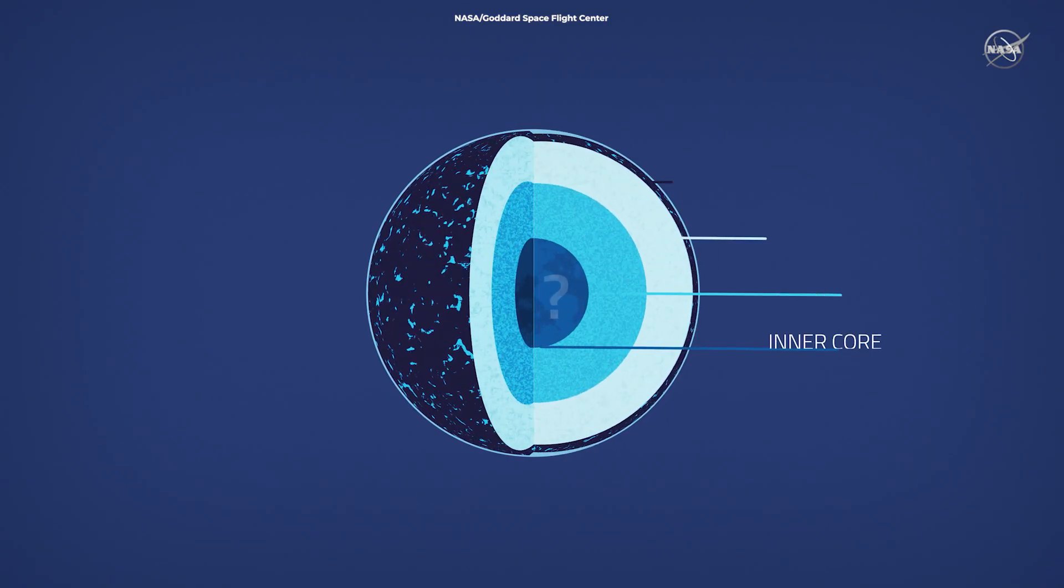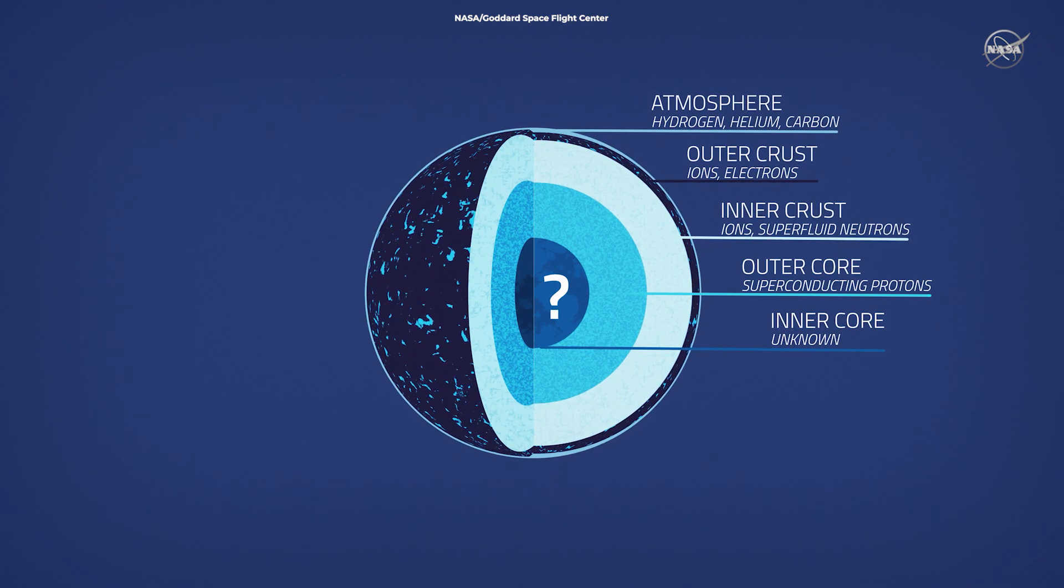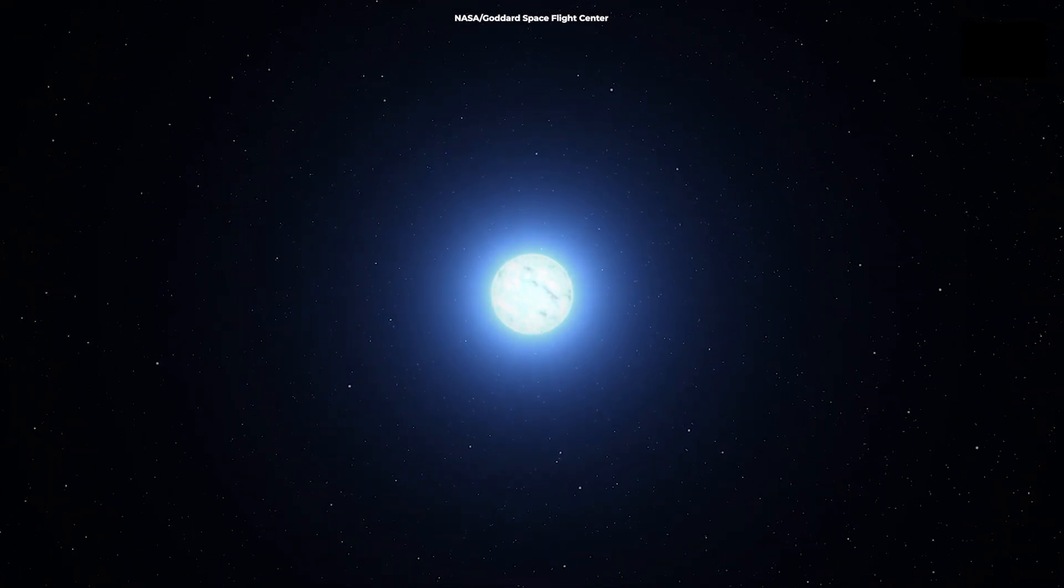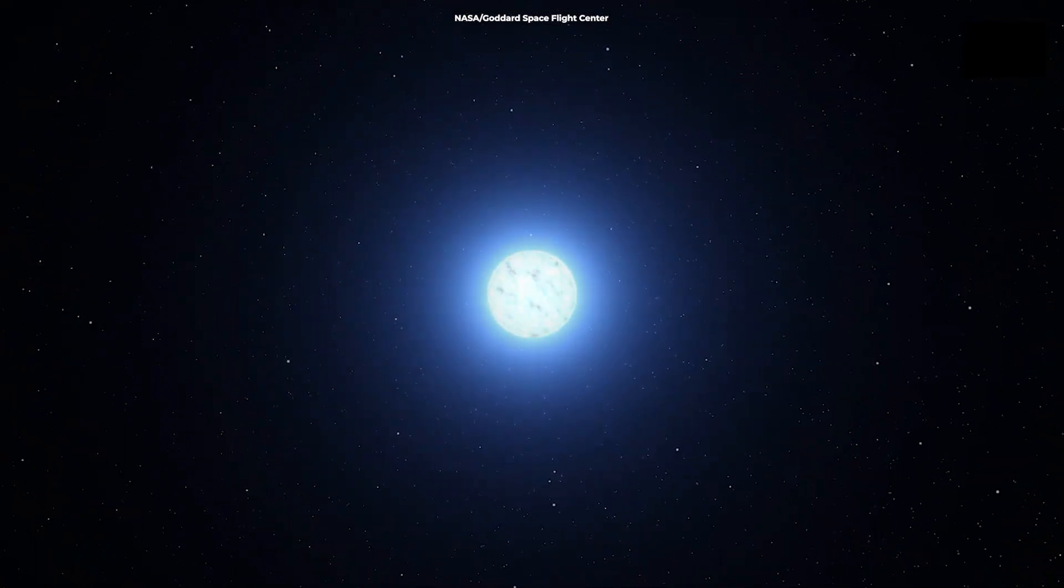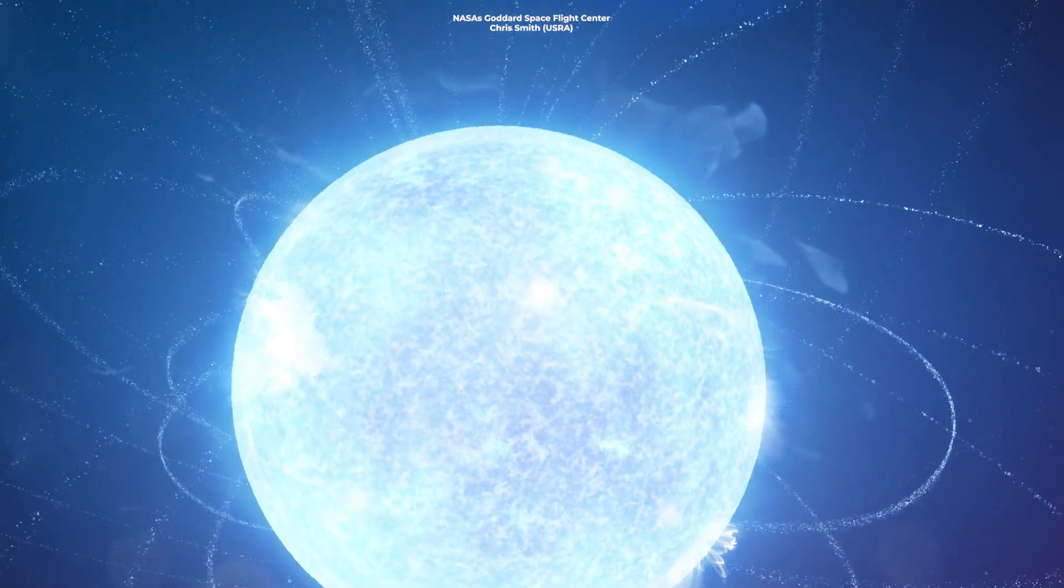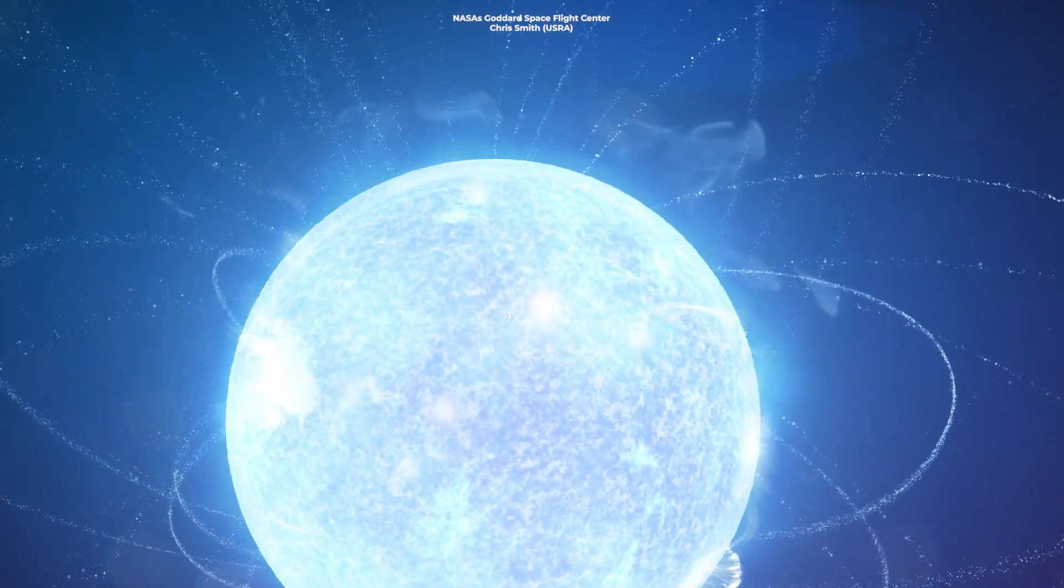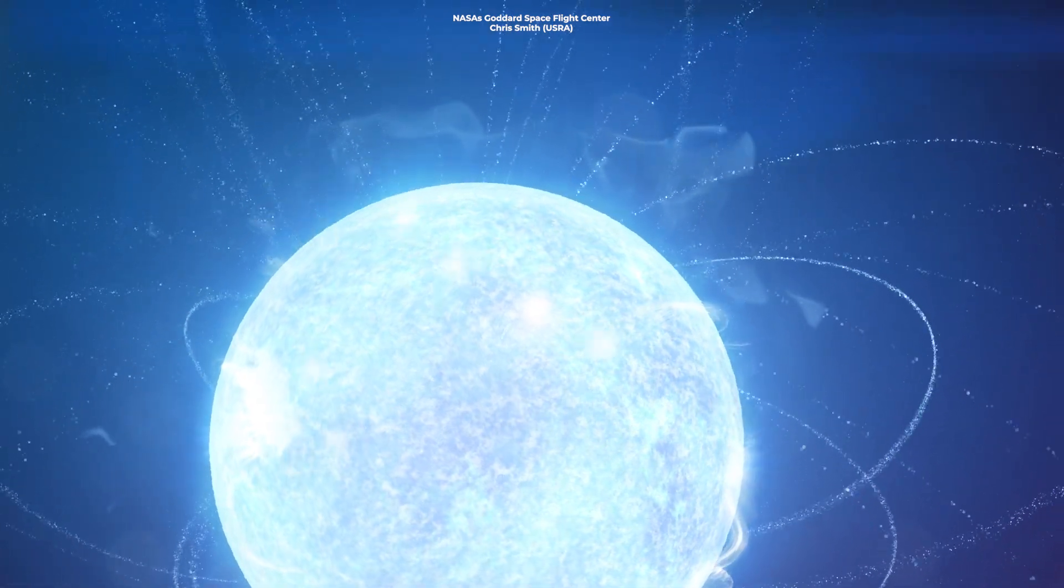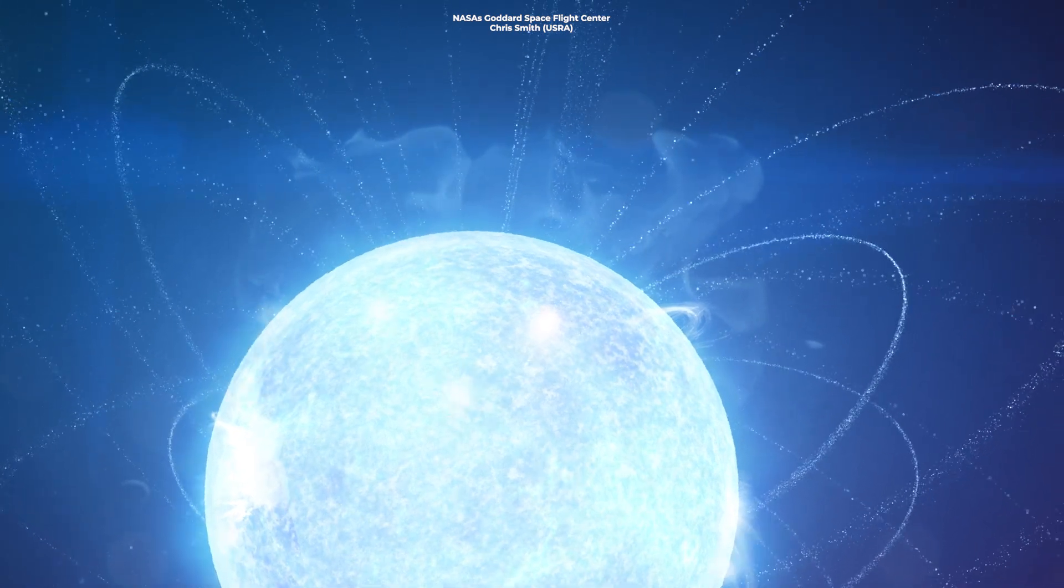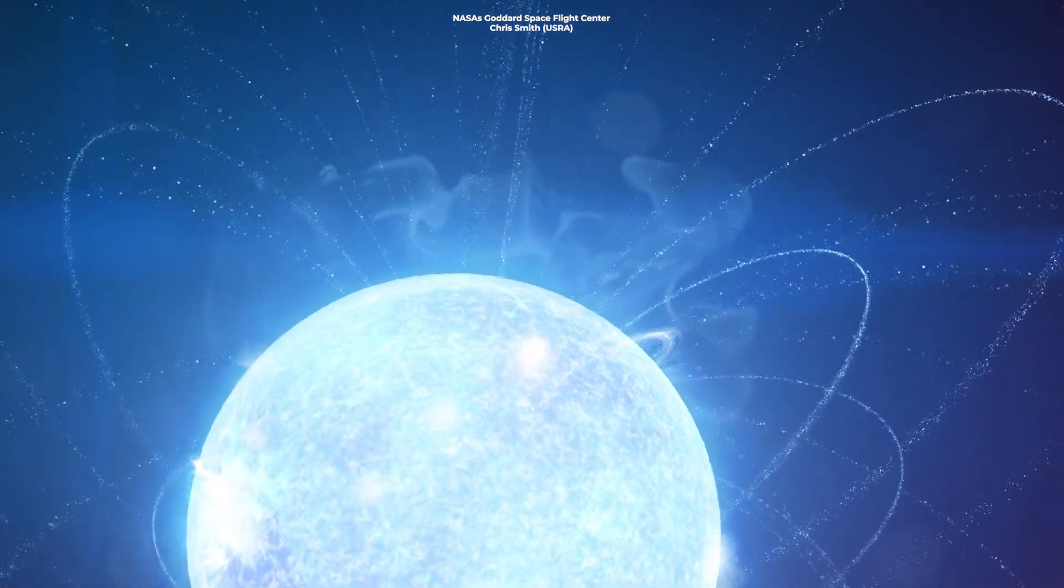The deeper you go inside a neutron star, the stranger it gets. The gravity of a neutron star is so strong that all of the particles are pulled together as tightly as possible, thus resulting in a solid, super-smooth spherical surface, just a centimeter or two thick. Computer models indicate that the surface is composed of ordinary atomic nuclei and a sea of free-roaming electrons. Scientists think that the nuclei at the surface are iron due to iron's high binding energy per nucleon.